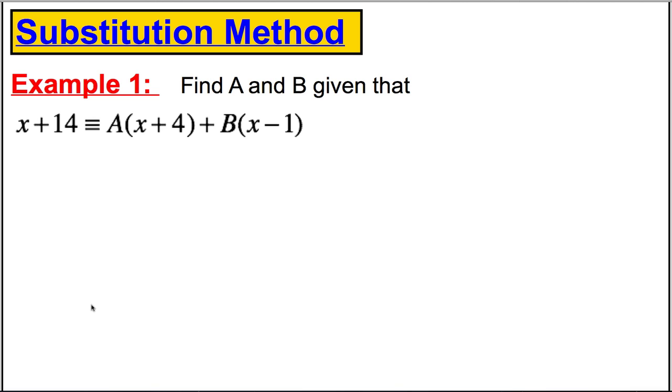This is the substitution method. Imagine I was given the following and I was asked to find A and B given that the following is true. Now, you should know from your GCSE knowledge that this here is the sign for an identity. When you see three lines like that, it's a sign for an identity.